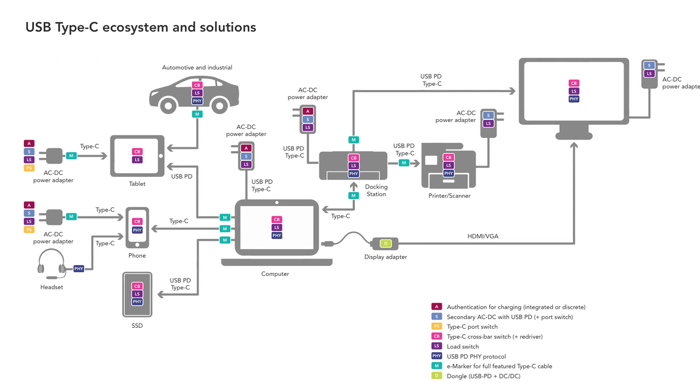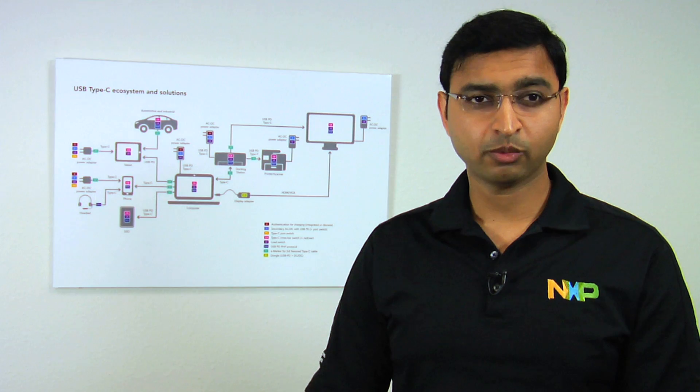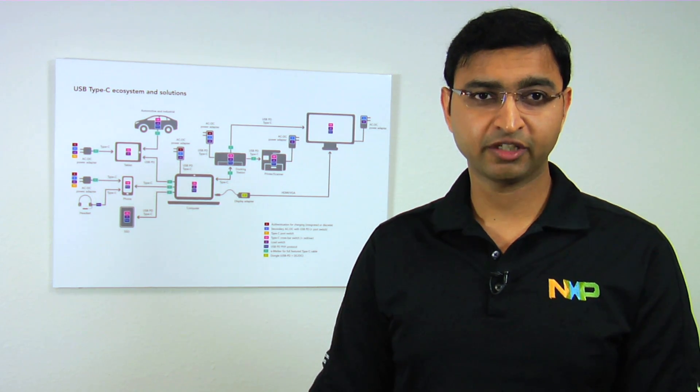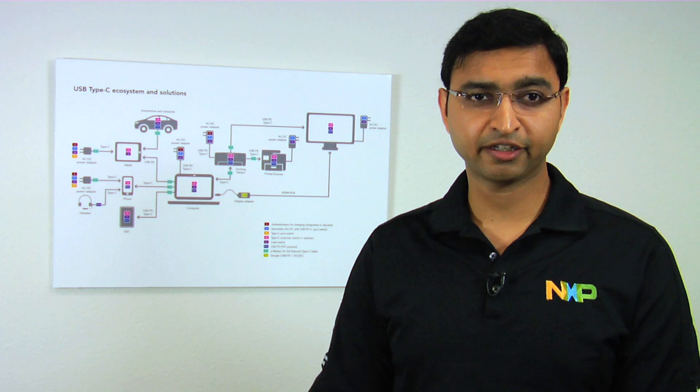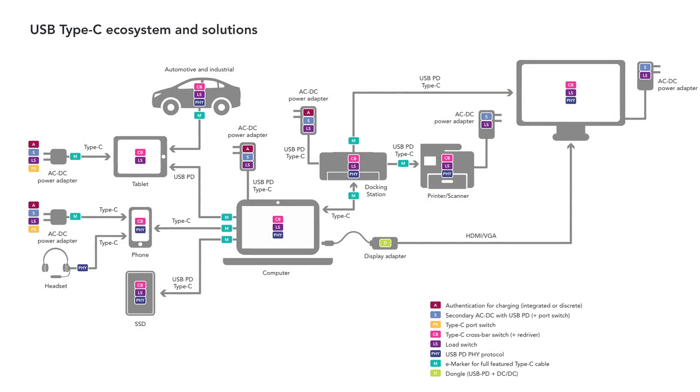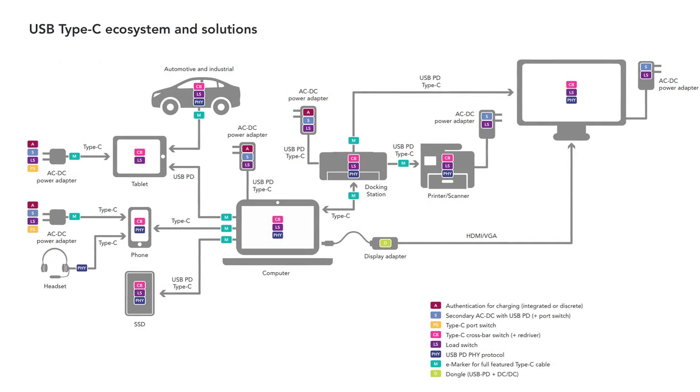The first one is the USB PD-5, which is a device that understands the power delivery communication between the two devices. Along with a PD physical layer device, which is PD-5, we need PD controller, we need load switches for port protection.